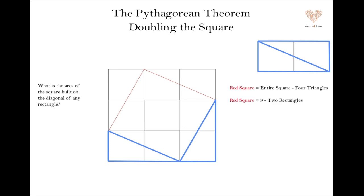Which means that four of those triangles should form exactly two of those rectangles. So the area of the red square will be nine, which is the area of the entire square, minus two of the rectangles. Of course, each rectangle is two squares, two one by one squares, so two of them will be four one by one squares. The area of the red square is nine minus four, which is five.